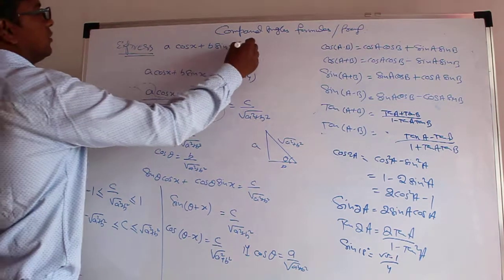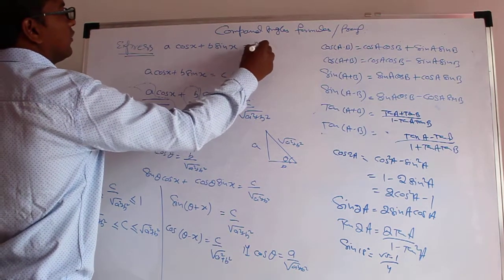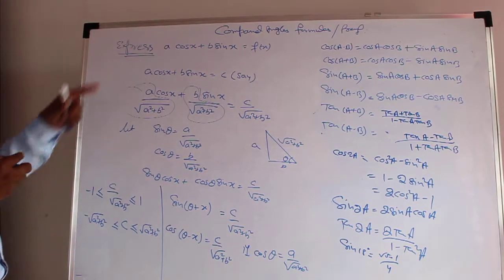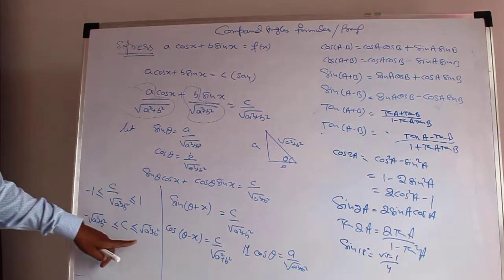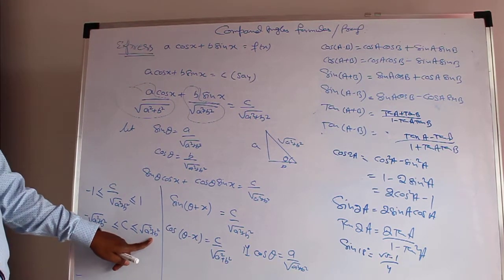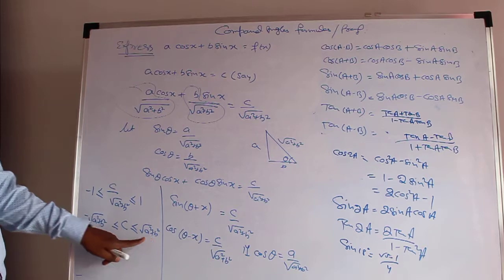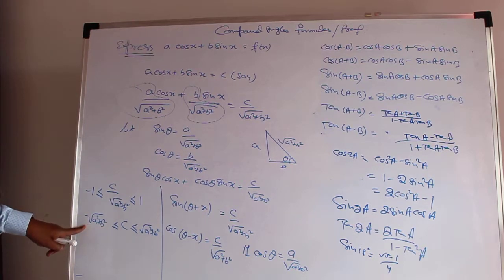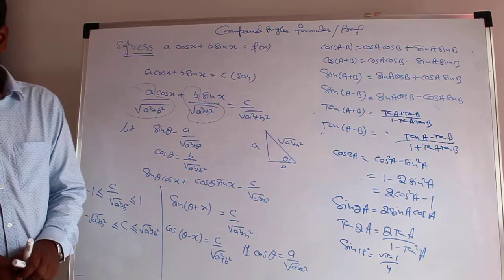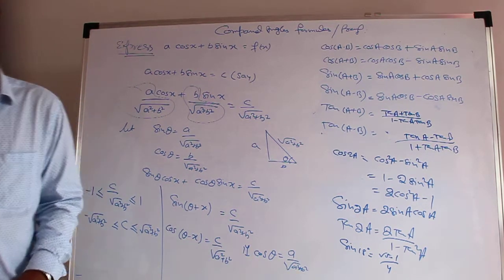Suppose this expression is f(x). Then the maximum value of f(x) will be √(A² + B²) and the minimum will be −√(A² + B²).